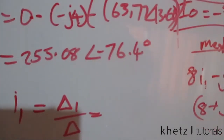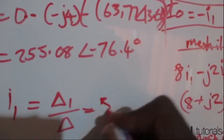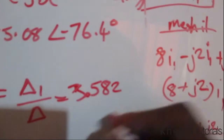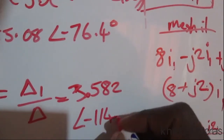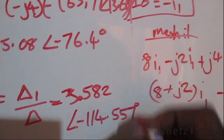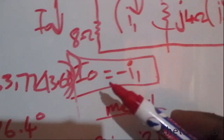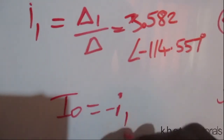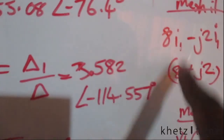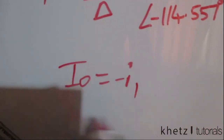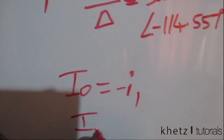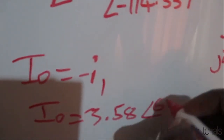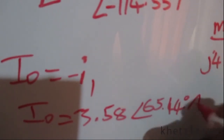Applying Cramer's rule, I1 = Δ1 ÷ Δ = 255.08∠−76.4° ÷ (56+j44), giving I1 = 3.582∠−114.557°. Since IO = −I1, we negate this in the calculator, and the final answer is IO = 3.58∠65.44° amperes.